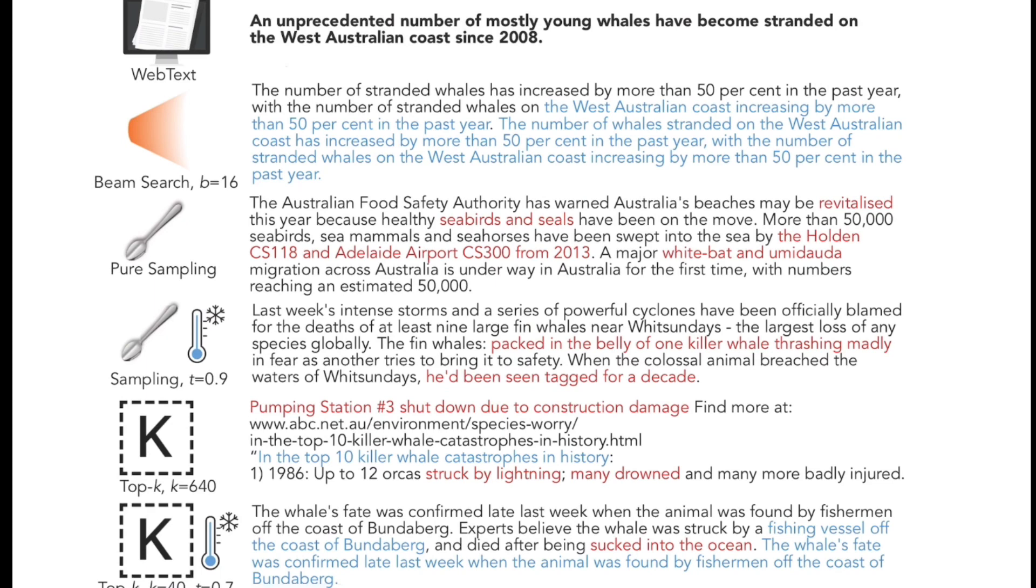Here they have given an example. If this was one of the web text, we want the model to generate a couple of words based on this context. They show a couple of decoding strategies. You have beam search where B equals 16. Blue stands for repetitive nature of the decoding strategy. You can see increased by 50% in the past year is repeated again and again for beam search.